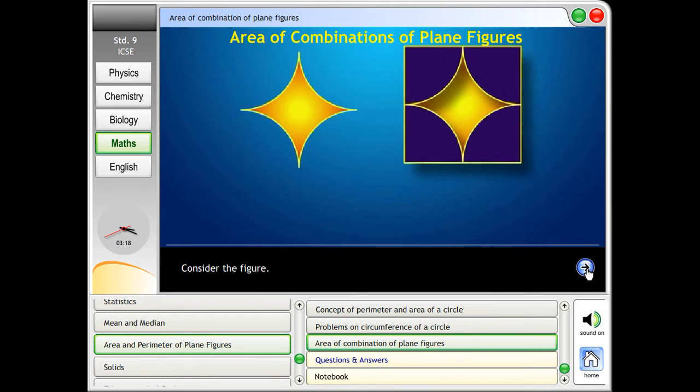Consider the figure. Area of square equals 4 into (2R) whole square equals 16R square.